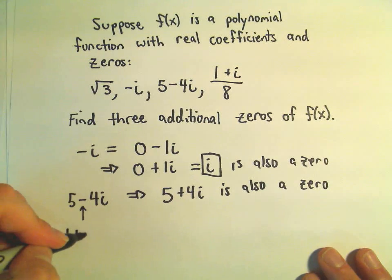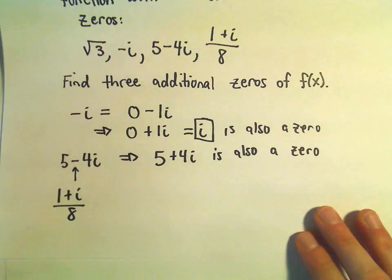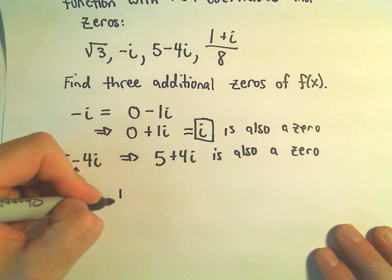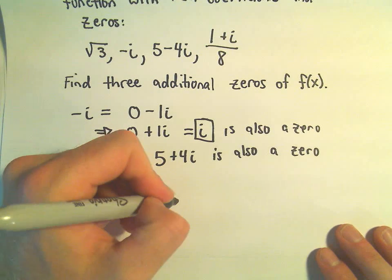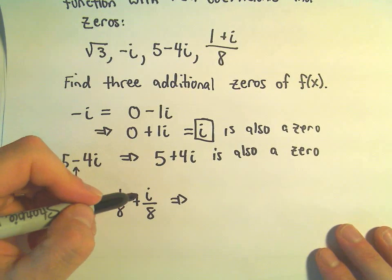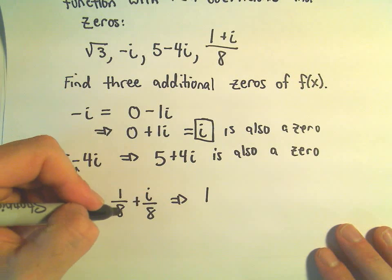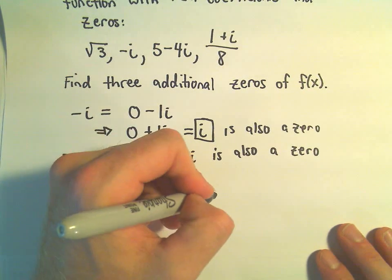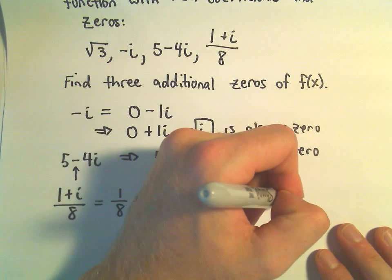And 1 plus i over 8, since that's a zero, you can think about this as, we could write it as 1 eighth plus i over 8. And since that's a zero again, we'll just change the sign in the middle. We could make it 1 eighth minus i over 8, or equivalently, 1 minus i over 8 is also a zero.